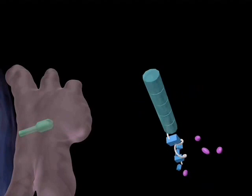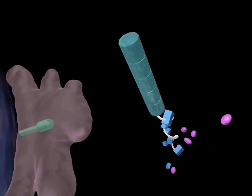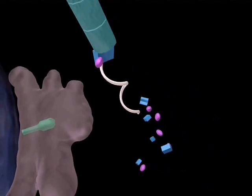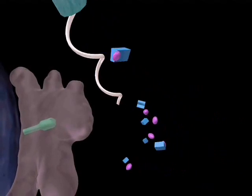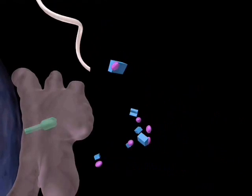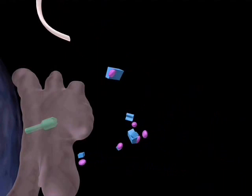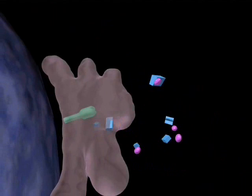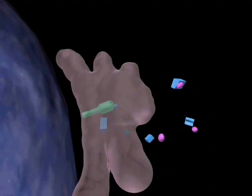MHC class I is synthesized by ribosomes on the endoplasmic reticulum. The peptide fragments are transported to the endoplasmic reticulum and loaded onto MHC class I molecules.